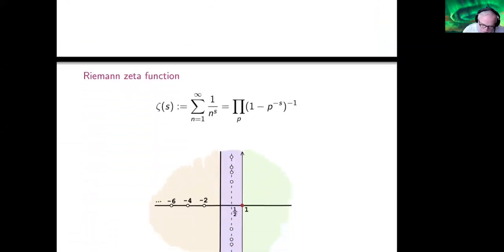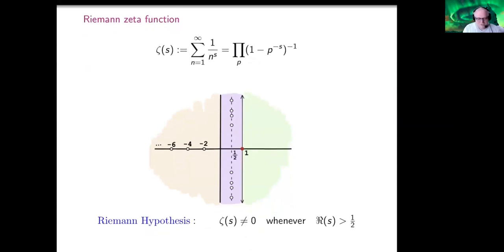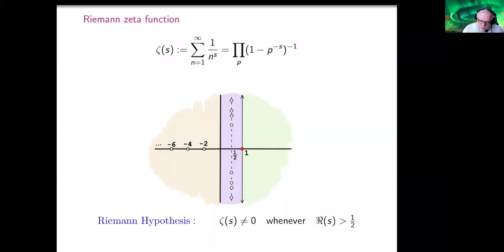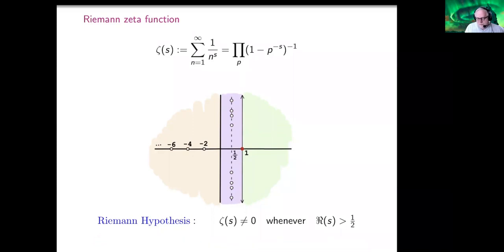I wanted to start my talk with the Riemann zeta function. Everyone here I'm sure knows what it is. The Riemann zeta function is defined by the series and also as an Euler product. It has a pole at s equal one, no other pole. We know about the zeros at the negative even integers. The Riemann hypothesis would say that all the remaining zeros lie on the half-line inside the critical strip — that zeta of s is non-zero if the real part of s is bigger than one half.